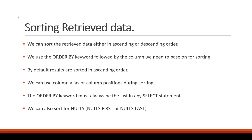For example, we may be interested in employee records, but these records should be returned in ascending order based on the first name, or based on salary from the highest salary to the lowest salary. With that in mind, we use the ORDER BY keyword. In Oracle, by default results are sorted in ascending order the moment we specify the ORDER BY keyword. When sorting data, we can use the column alias or column positions. The ORDER BY keyword must always come last in the select statement.